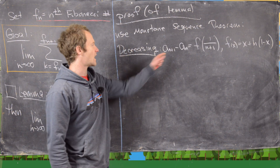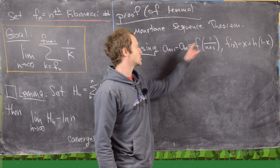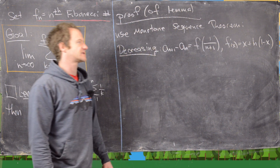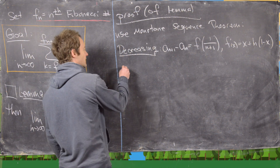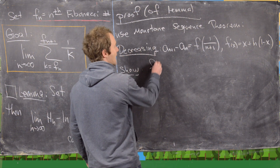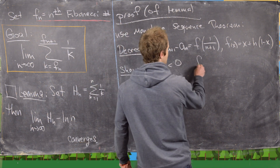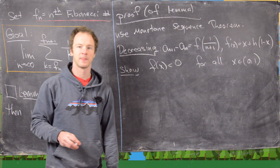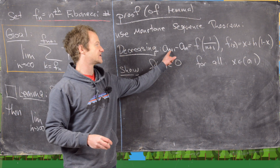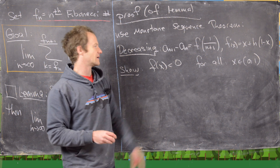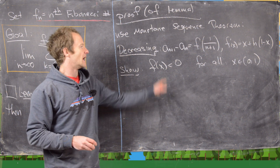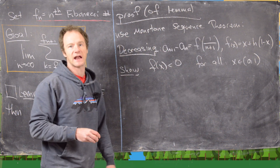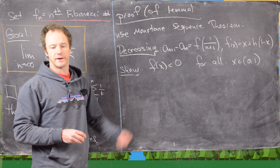We ended the last board with a_{n+1} minus a_n equals f(1/(n+1)), where f(x) equals x plus the natural log of 1 minus x. The next thing we'll do is show that f(x) is less than 0 for all x in the open interval (0, 1). That's going to show a_{n+1} minus a_n is always less than 0, because 1 over (n+1) is always within that interval (0, 1).